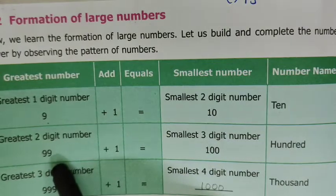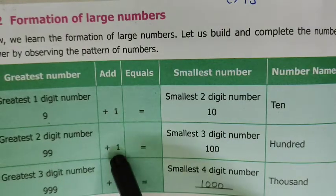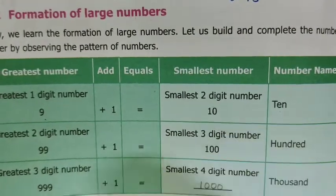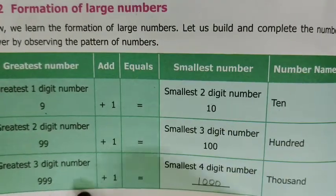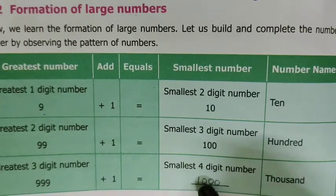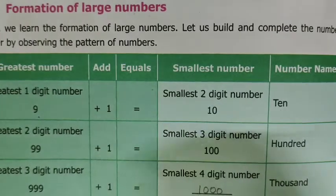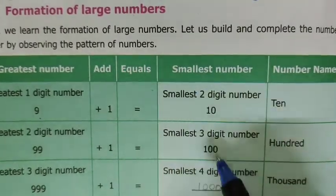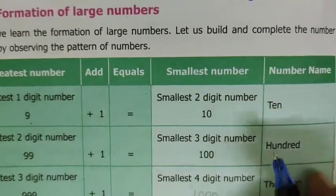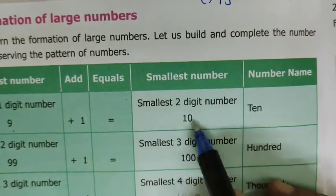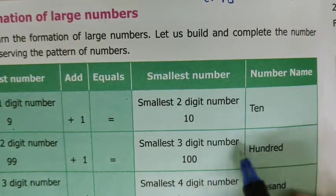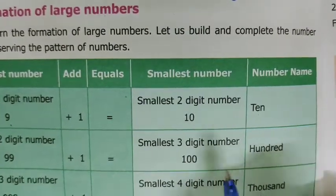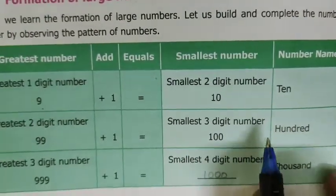A 2-digit number leads to a 3-digit number, a 3-digit number leads to a 4-digit number. So 10 is 2 digits, 100 is 3 digits, 1,000 is 4 digits. The pattern continues: 10, 100, 1000.